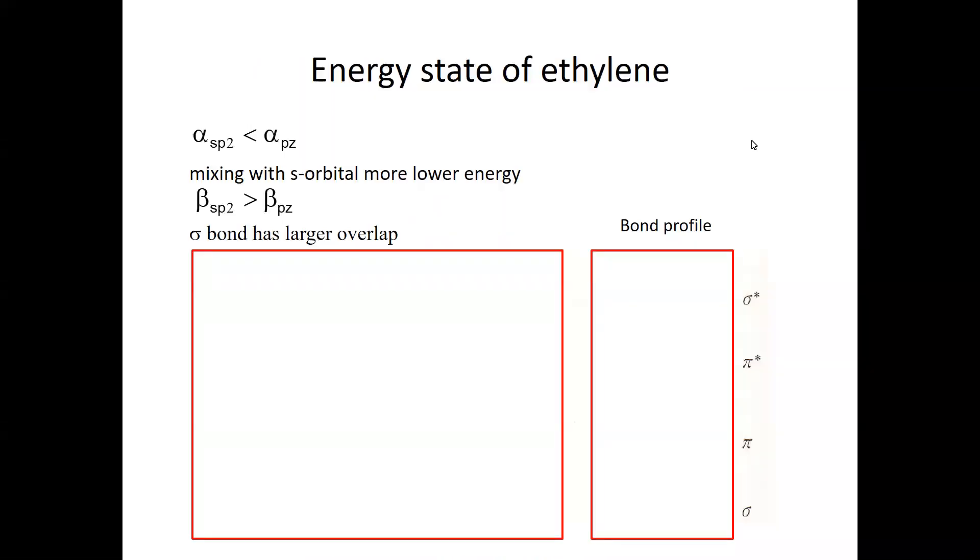Now let's summarize the energy state of ethylene. So as we've studied, ethylene has two different bonds. One is a sigma bond, and then the other is pi bond, and they are made from electrons in sp2 orbital and the pz orbital.